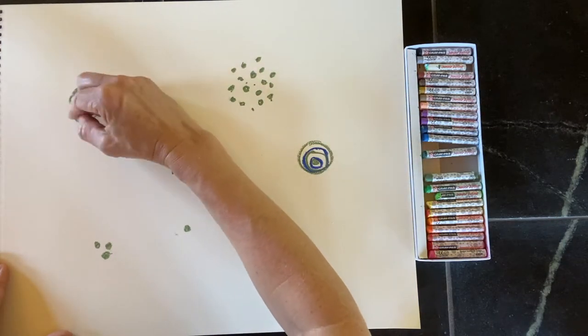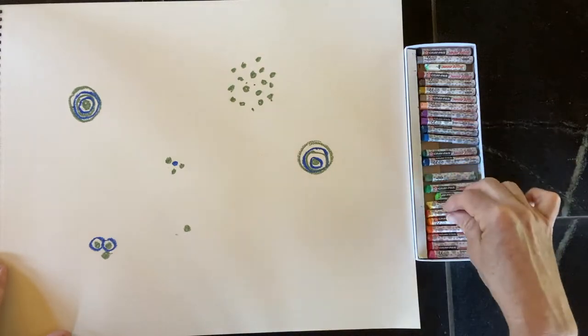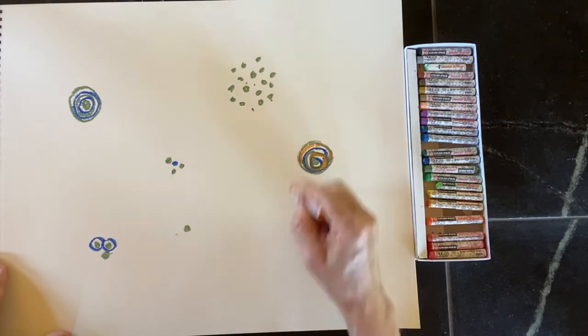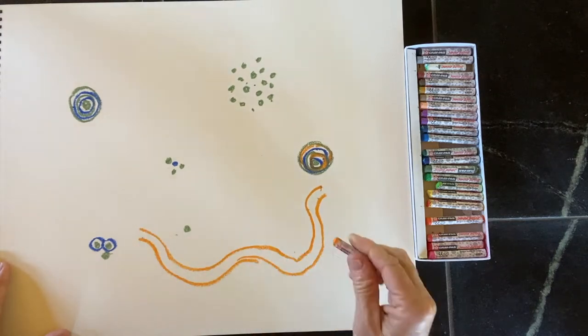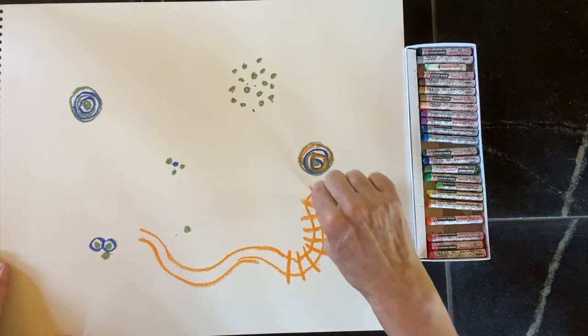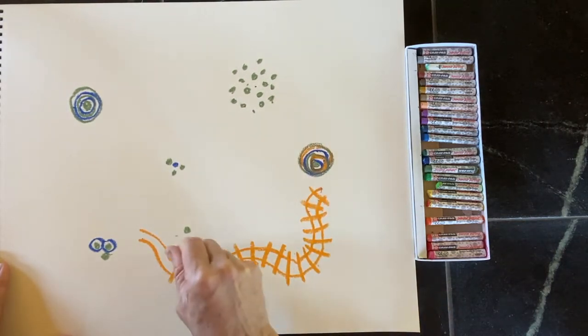So for example, if you're using oil pastels today, like I am, I have this orange oil pastel, and I'm kind of experimenting with what kind of lines it wants to make.